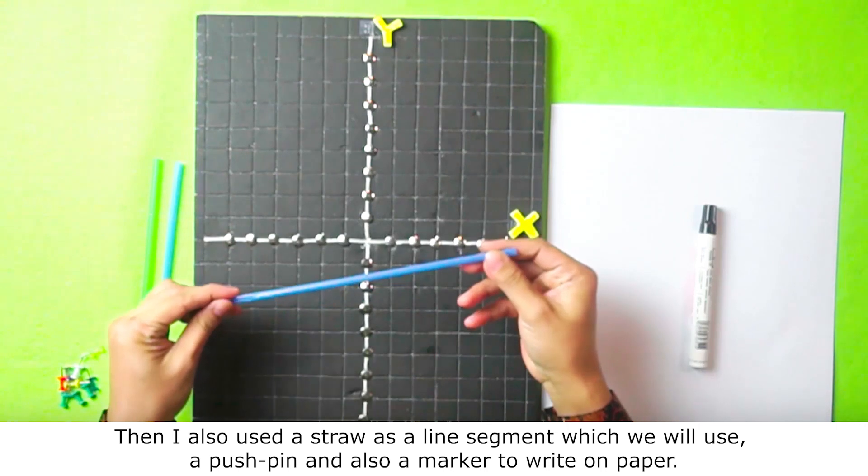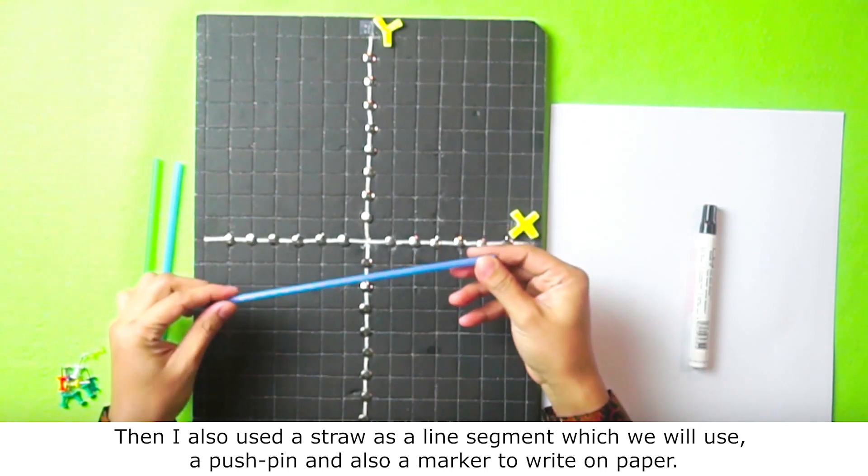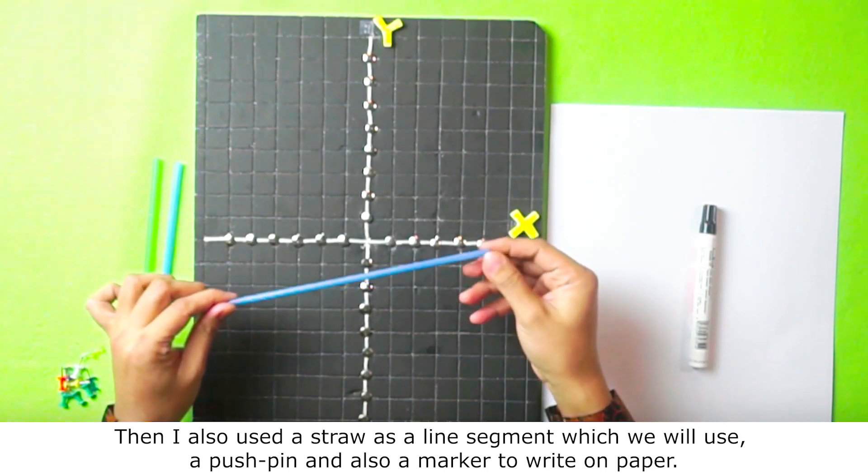Then I also use a straw as a line segment which we will use, a pushpin, and also a marker to write on paper.